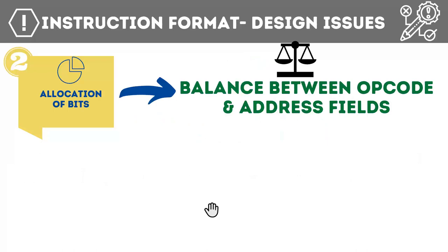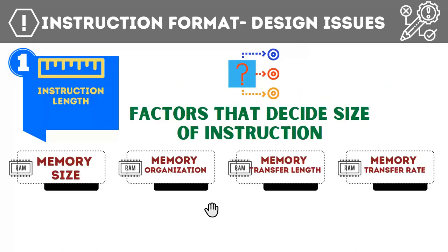So the first design issue — instruction length — requires considering memory size, organization, transfer length, and transfer rate. Taking a trade-off between these factors determines the appropriate instruction length. The instruction length of a processor is not determined at random; a large number of factors determine what it should be.